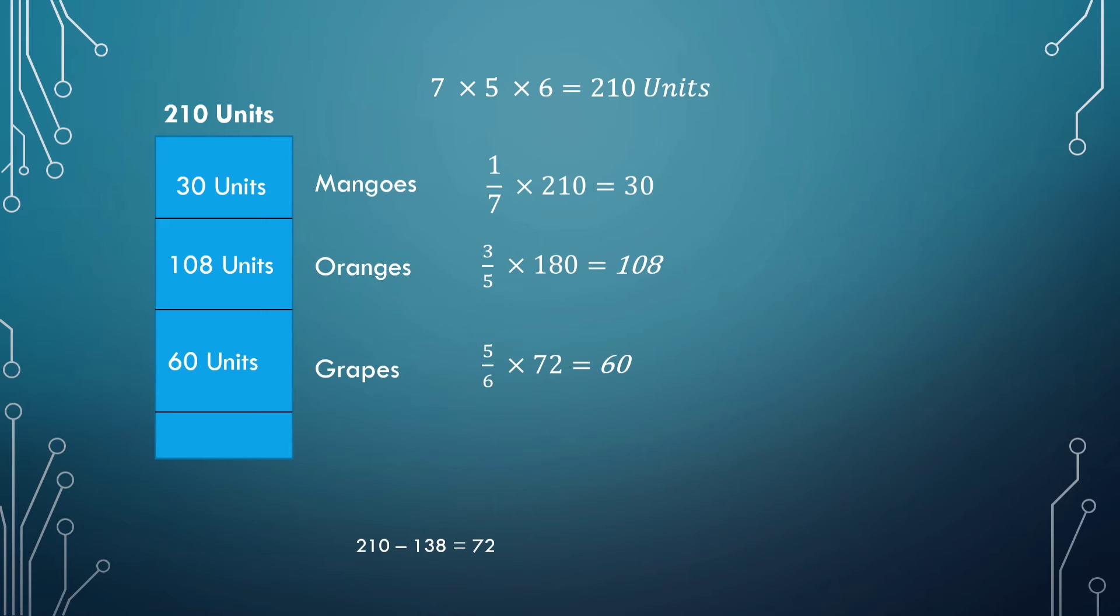The remaining portion now will be 210 minus the sum of all those units there. That is to say, 210 minus 198, that would give me 12 units. So this 12 units here would be the cash in hand.